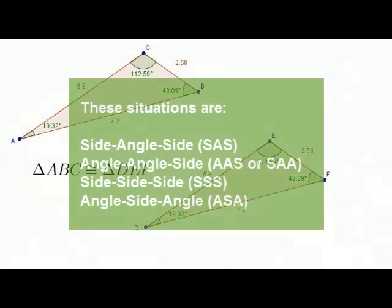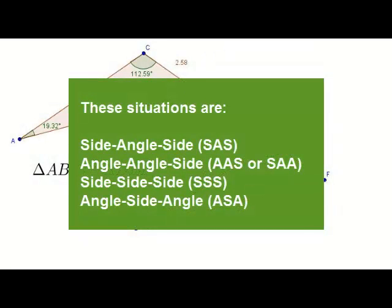There are only certain situations when three pieces of information are good enough. For example, if you know that all three sides of both triangles are congruent, that's enough. If you know that two sides and an included angle of one triangle are congruent to two sides and an included angle of another triangle, that also happens to be enough.